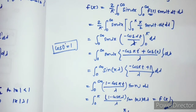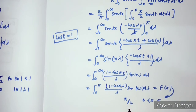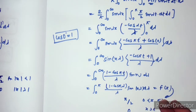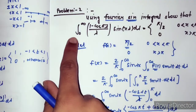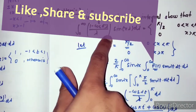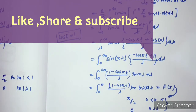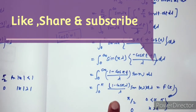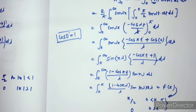So f(x) equals π/2 when 0 < x < π, and 0 when x is greater than π. This is the answer and proof of f(x). The integral from 0 to infinity also proves π/2. This is your answer. Thank you for watching this video — please like, subscribe, and comment.